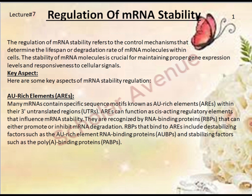First are AU-rich elements (AREs). Many mRNAs contain specific sequence motifs known as AU-rich elements within their three-prime untranslated regions (UTRs). AREs function as cis-acting regulatory elements that influence mRNA stability. They are recognized by RNA binding proteins (RBPs) that can either promote or inhibit mRNA degradation. RBPs that bind to AREs include destabilizing factors such as AU-rich element RNA binding proteins (AUBPs) and stabilizing factors such as poly-A binding proteins (PABPs).